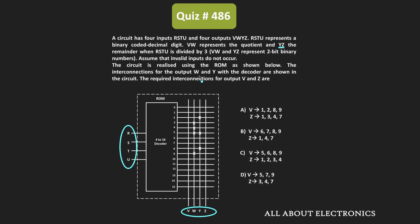The circuit which performs this specific function is implemented with the help of this ROM. We have also been given the interconnections for output W and Y. We have been asked to find the remaining interconnections for output V and Z.